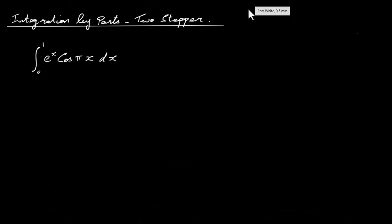In this video I'm going to have a look at integration by parts, and in particular a question called a two-stepper. We have the integral of e to the power of x cos pi x. If we try to integrate this we're going to end up with another integral involving e to the power of x and sine pi x, and if we integrate that we end up back where we started — we're going around in circles.